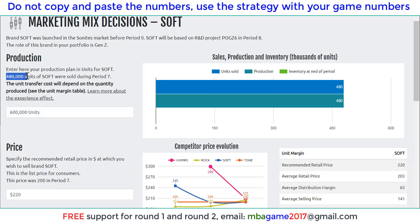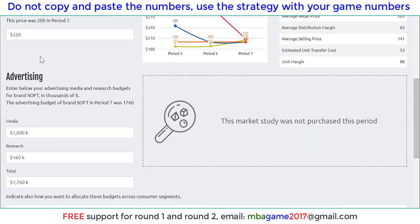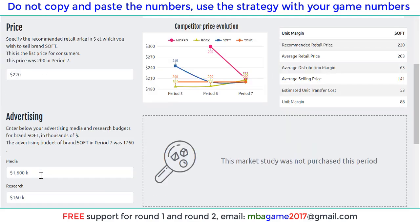We know that Soft sells a very high amount, and Soft will increase demand by about 120, so we can set it to 600 here. We can also maintain the advertising budget and increase the price if we check the competitors' prices and the profit margin here. That's the way we handle the marketing mix decisions.